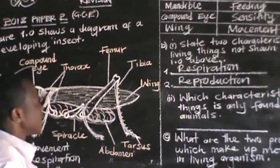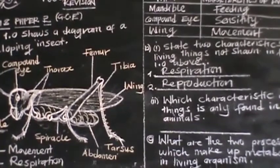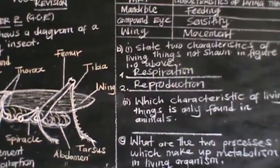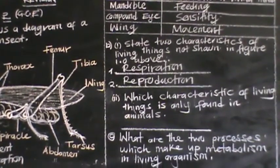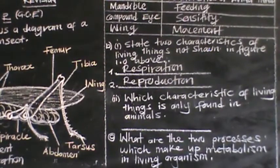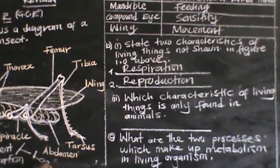Question B also asks: which characteristic of living organisms is only found in animals — only in animals, meaning not in plants? That would be movement, but more specifically, under movement, you can say locomotion. Under movement, you can even say locomotion.